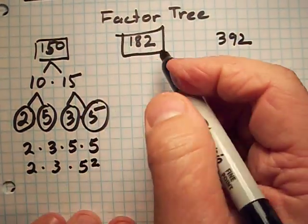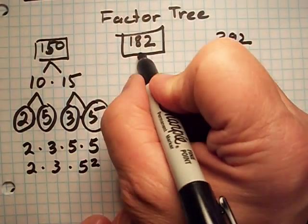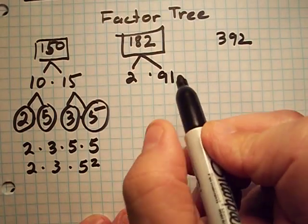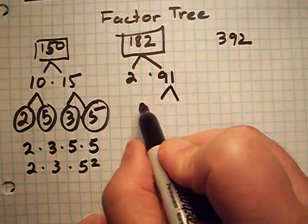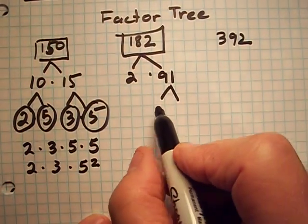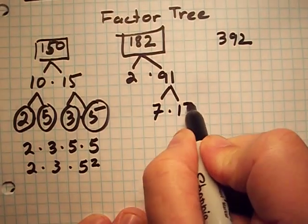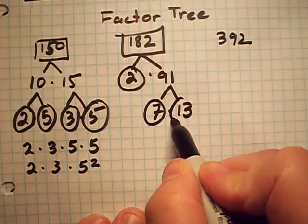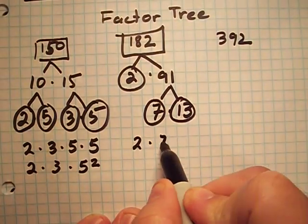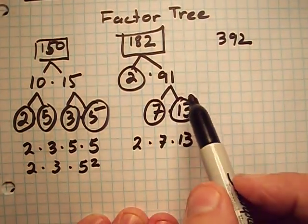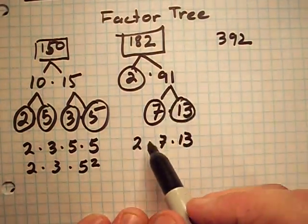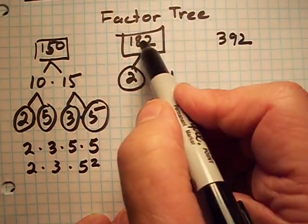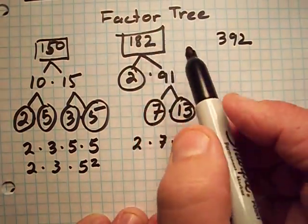Let's do 182. I'm going to start with a prime number: 2 times 91. Now I'll work with 91 — that's 7 times 13. Now all my numbers are prime. So 2 times 7 times 13 are the prime factors of 182.